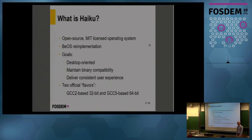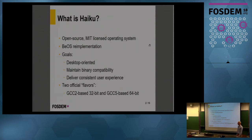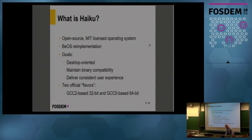We have our custom kernel. Our windowing system is also custom. There are two official flavors: a GCC2-based 32-bit and a GCC5-based 64-bit. Before you run away screaming about GCC2 — you don't actually have to comply with the C++ flavor that GCC2 understands. That's only a requirement for kernel code. You can actually write applications in GCC5 and run them on the GCC2-compiled system, because we ship a GCC5-compiled user space. So you don't really have to do anything with GCC2.